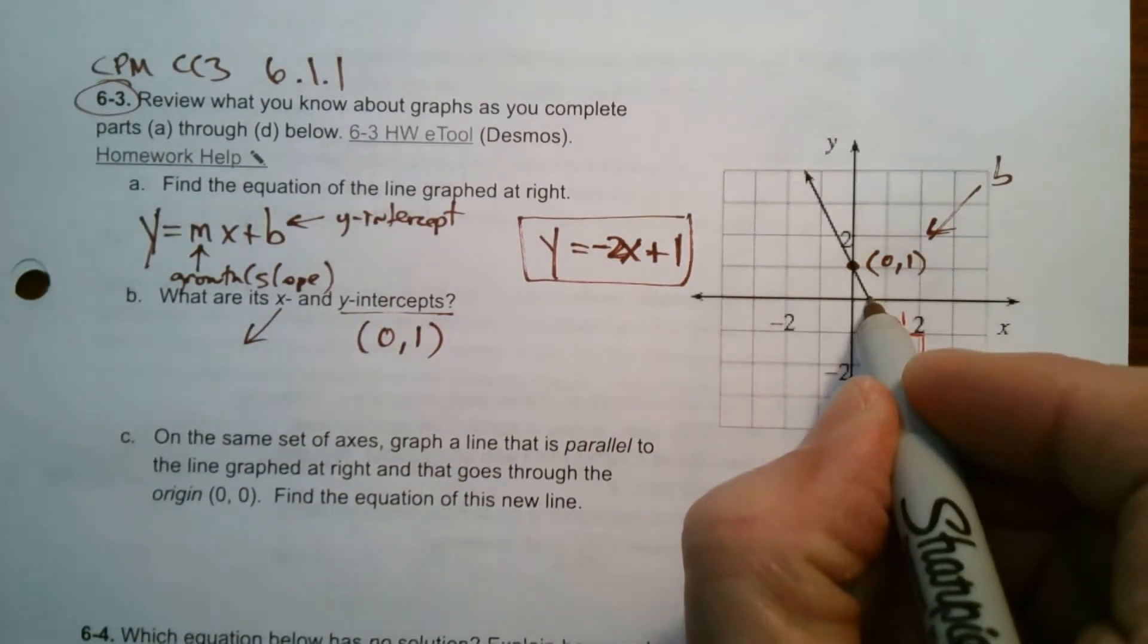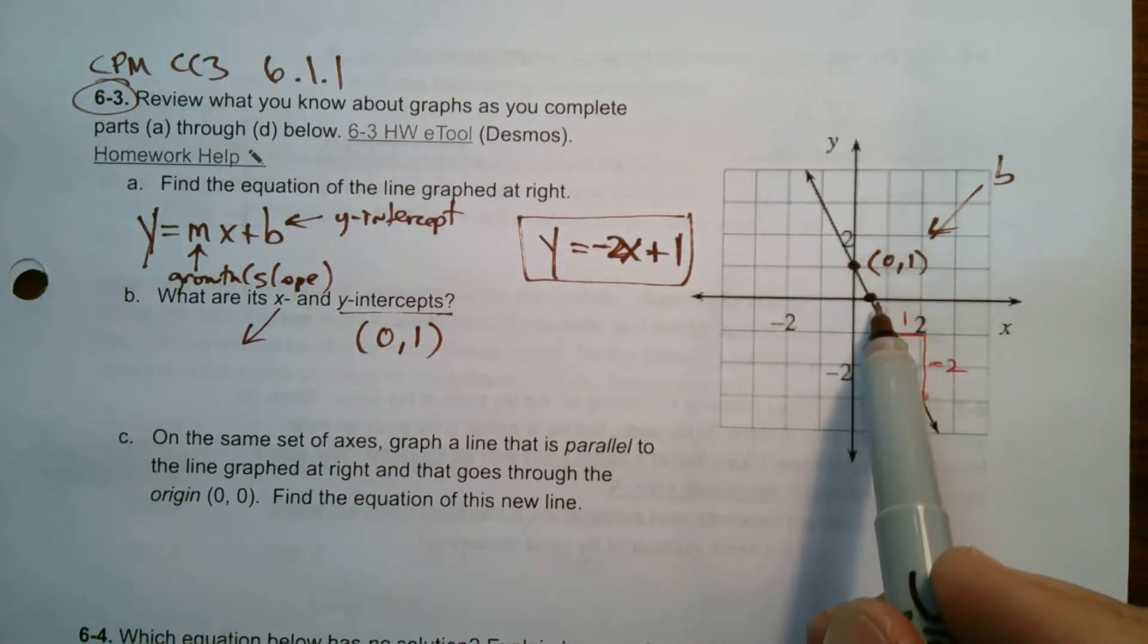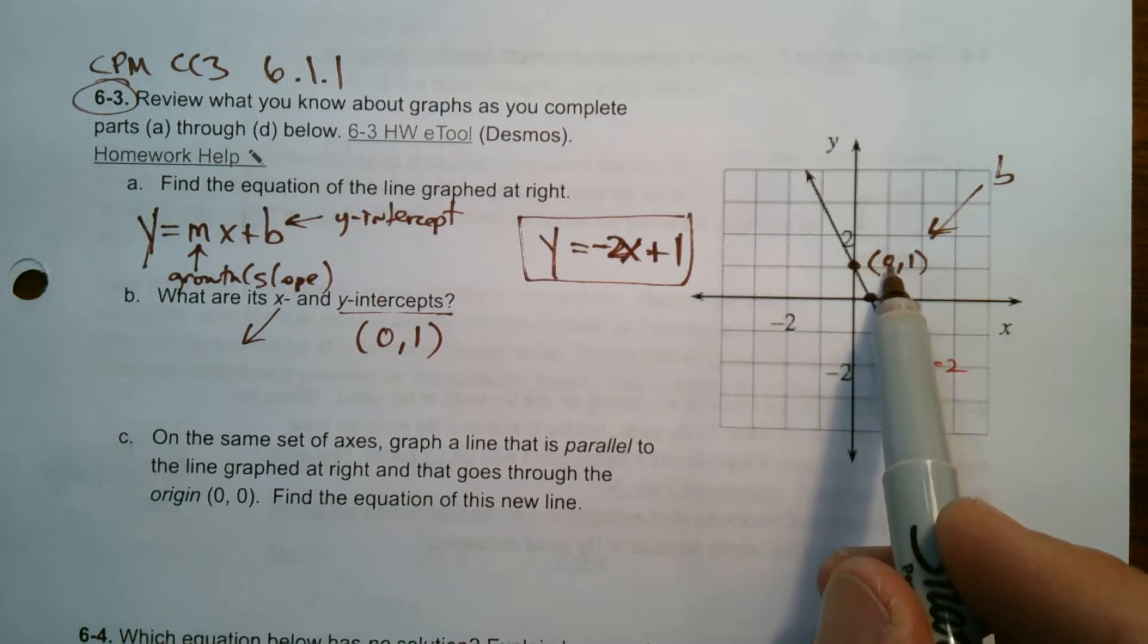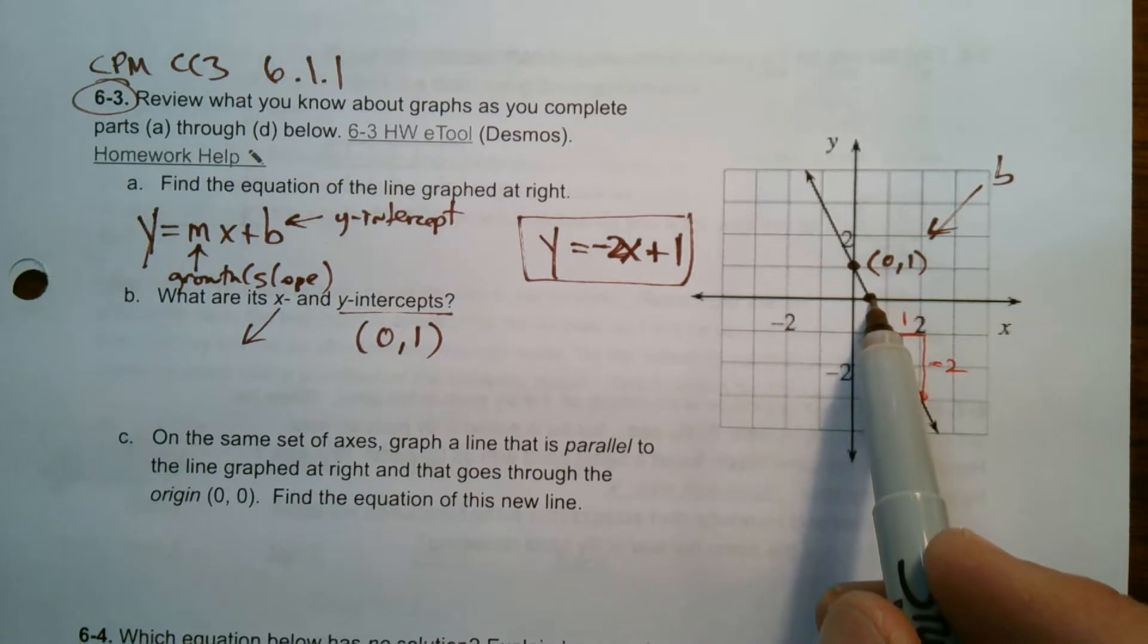Well, the x intercept is where it crosses the x-axis. So where would that? Well, if you notice, it doesn't cross at a nice lattice point. But what's true is if I'm going over 1 down 2, then if I went over 1 half down 1, I'd be where I'm at, right?